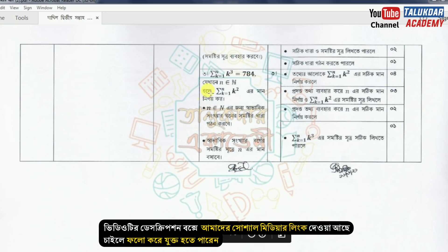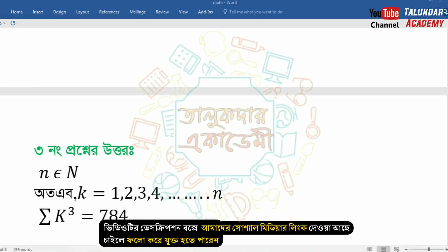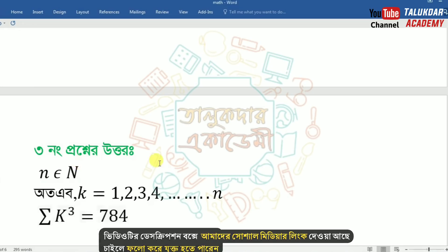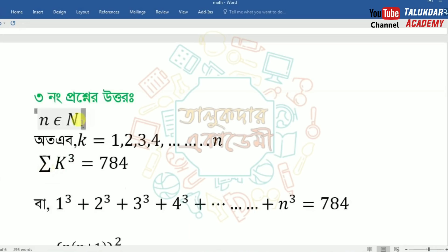3 questions. 3 numbers are called summation n, k, 1. The first question involves n, epsilon n, meaning n is equal to n. So k is equal to 1, 2, 3, 4. In the matrix, we should be able to assume k cubed is 0.